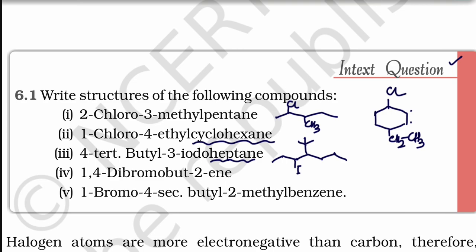Okay, now a carbon with three other groups. So you can say three iodine, four tertiary butyl means this is tertiary butyl. 1,4-dibromobut-2-ene. But-2-ene means this is but-2-ene. 1,4-dibromo, this is bromine first place, this is.